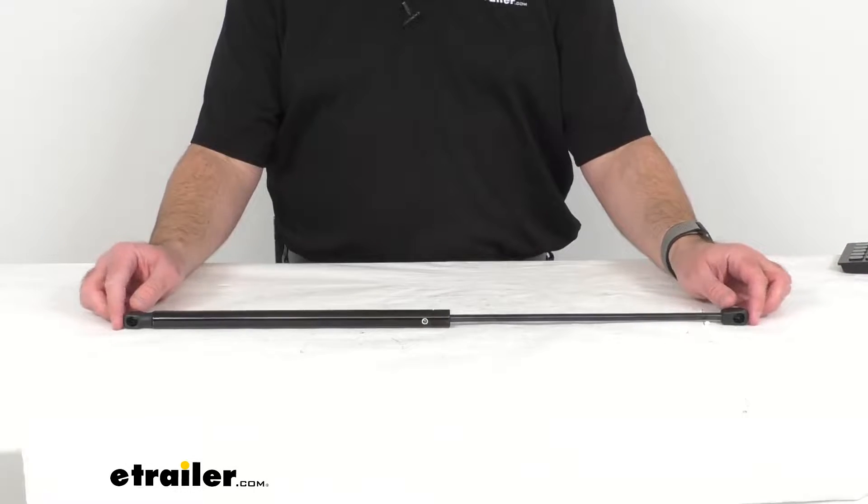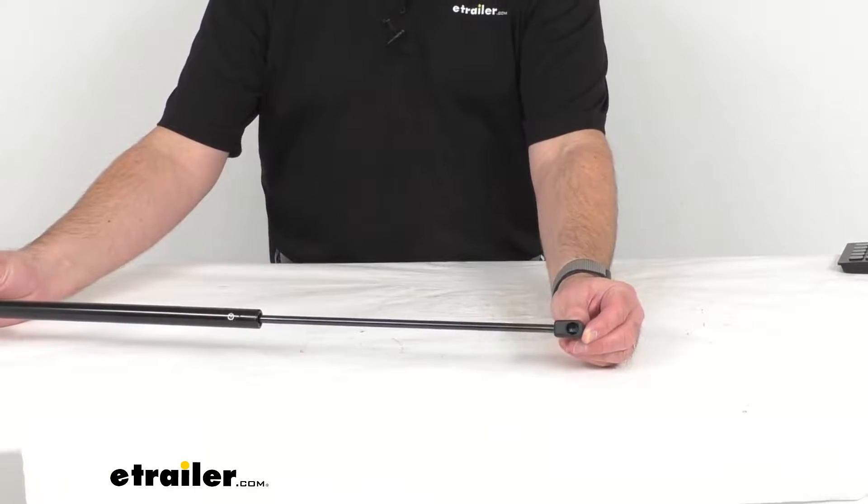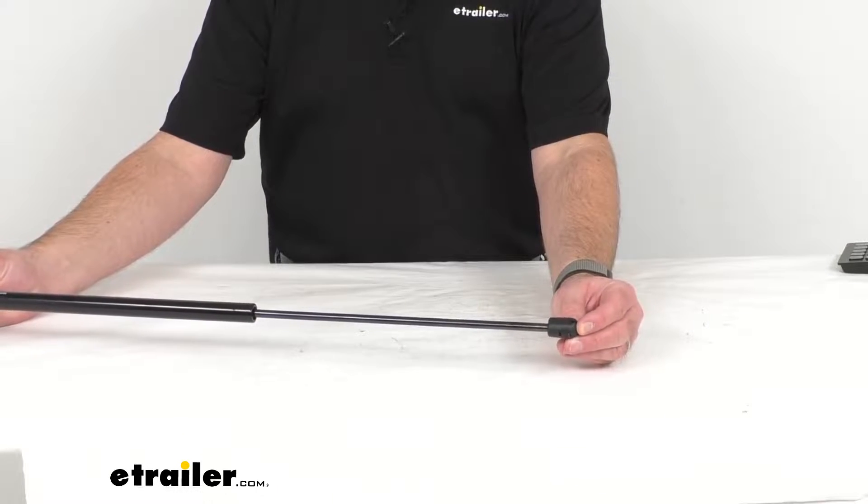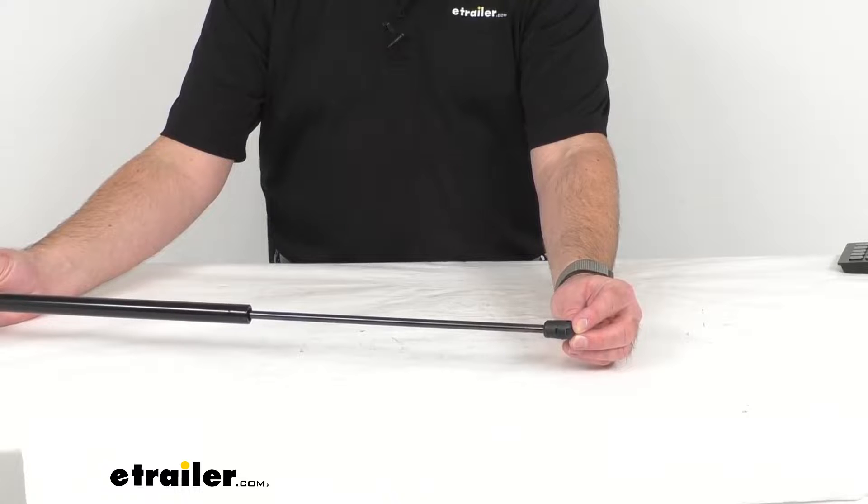Now this is going to replace one damaged or worn ball and socket gas strut for your truck cover, your boat hatch, your toolbox, and more.